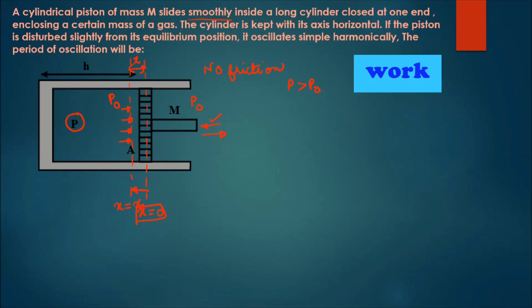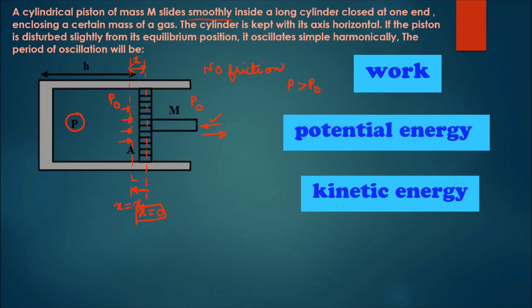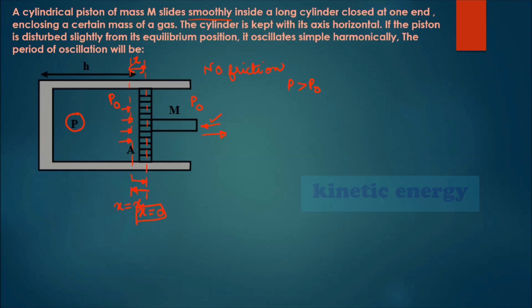When the piston is pushed inward, work is done and stored as potential energy. When released, this work produces a restoring force bringing the piston back to its original position. But it does not stop there because it possesses kinetic energy, so it moves ahead by displacement x in the other direction. There, pressure inside becomes less than outside, so a restoring force slows it down. After reaching its amplitude, it moves back toward equilibrium — and this keeps happening, forming oscillation.